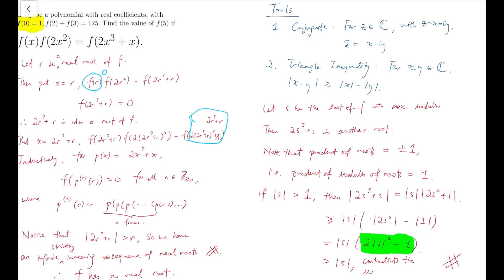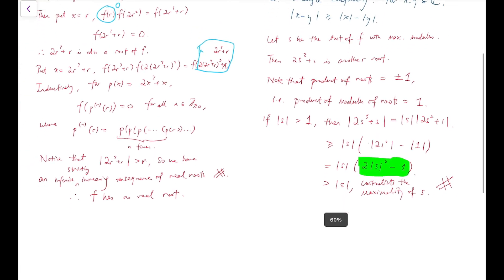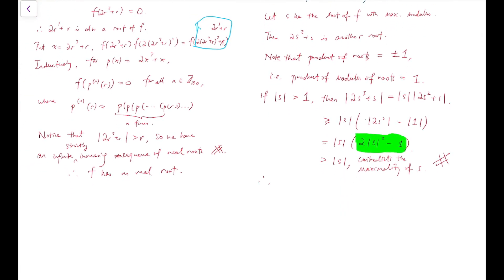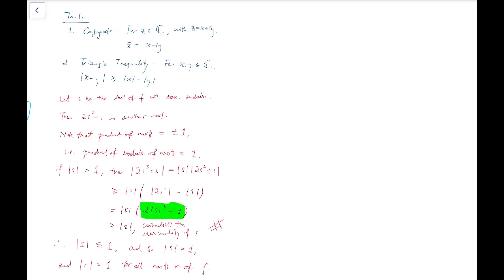It actually contradicts the maximality of s. So that means the modulus of the root with the greatest modulus is not even greater than 1. So that means all the roots of f has modulus to be exactly equal to 1.